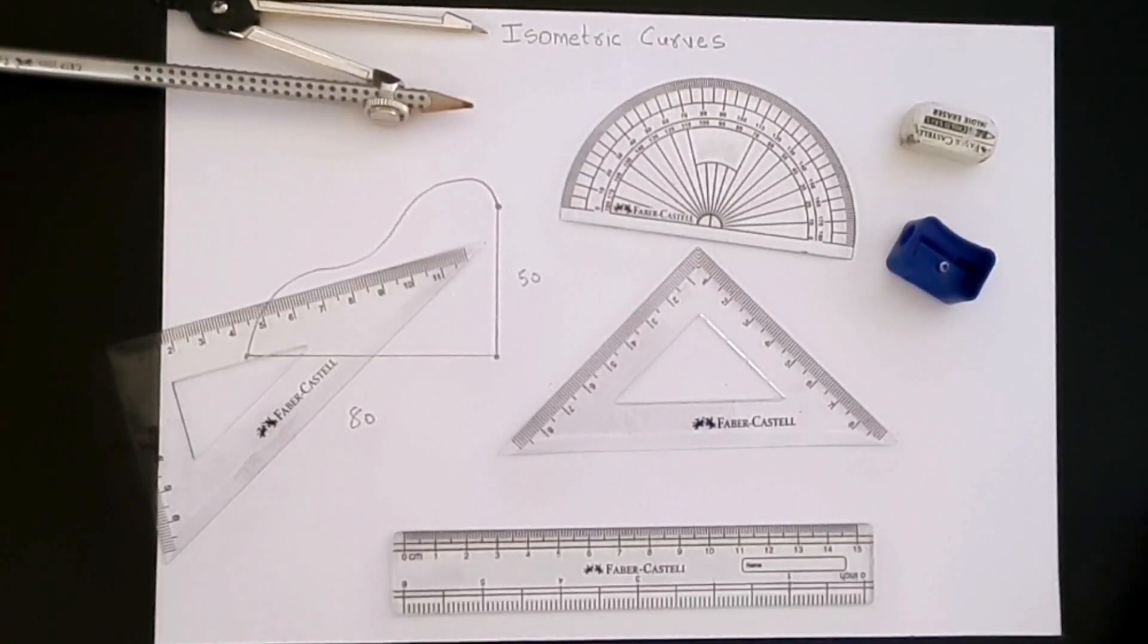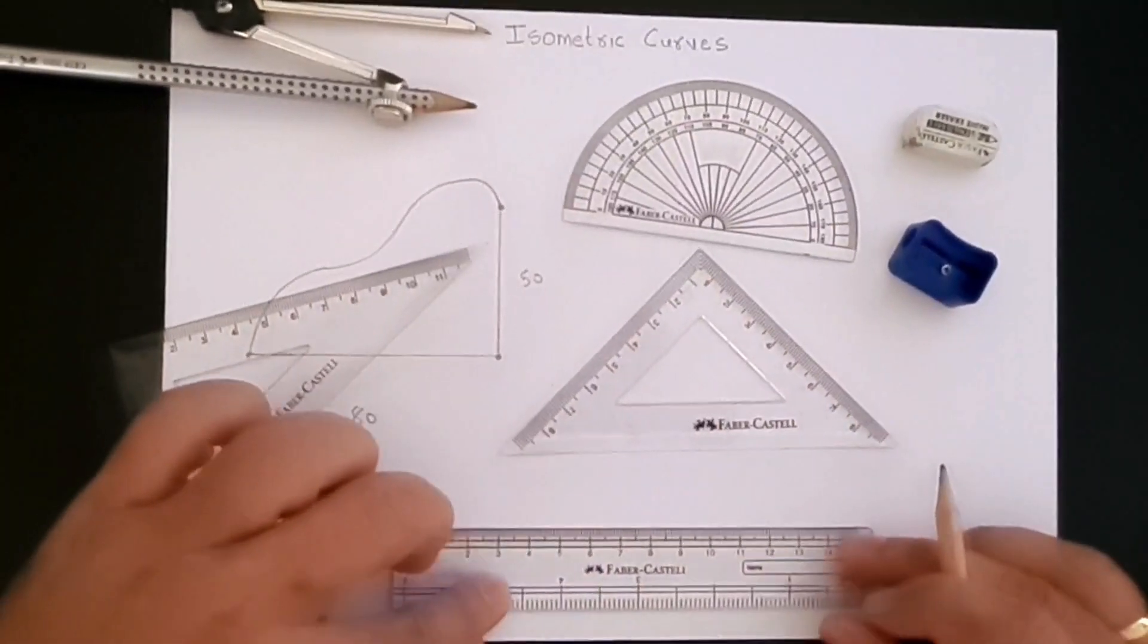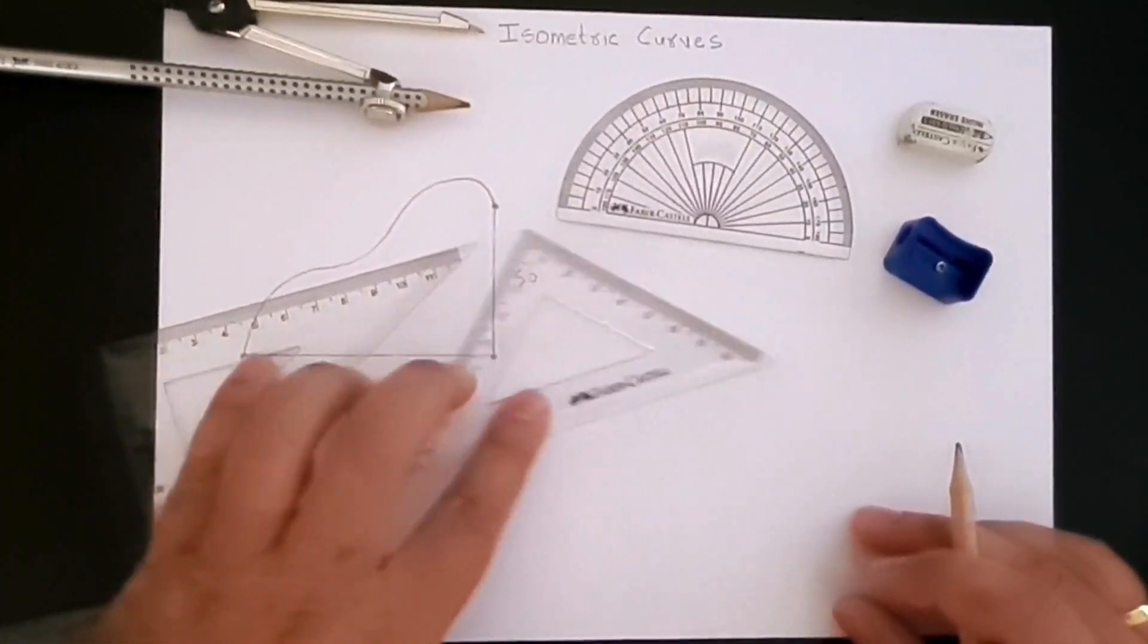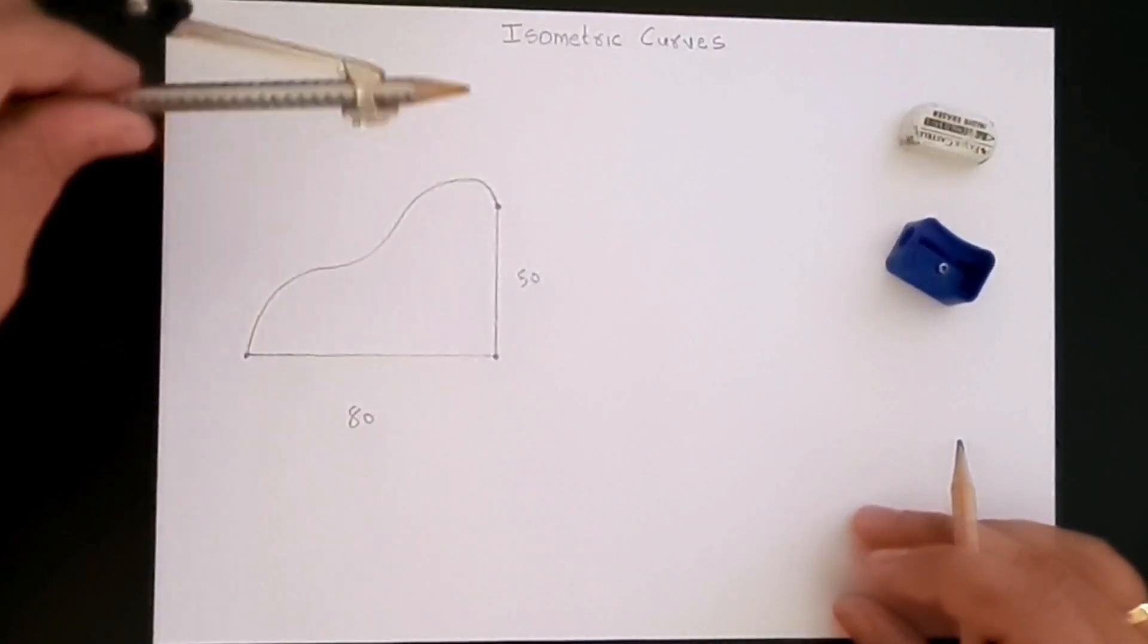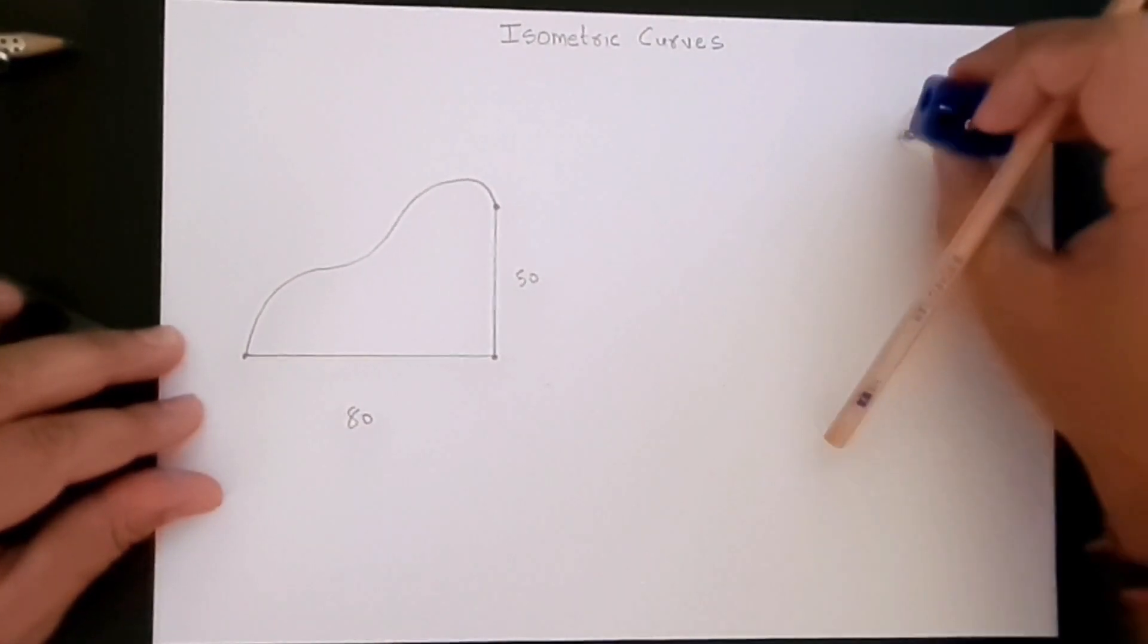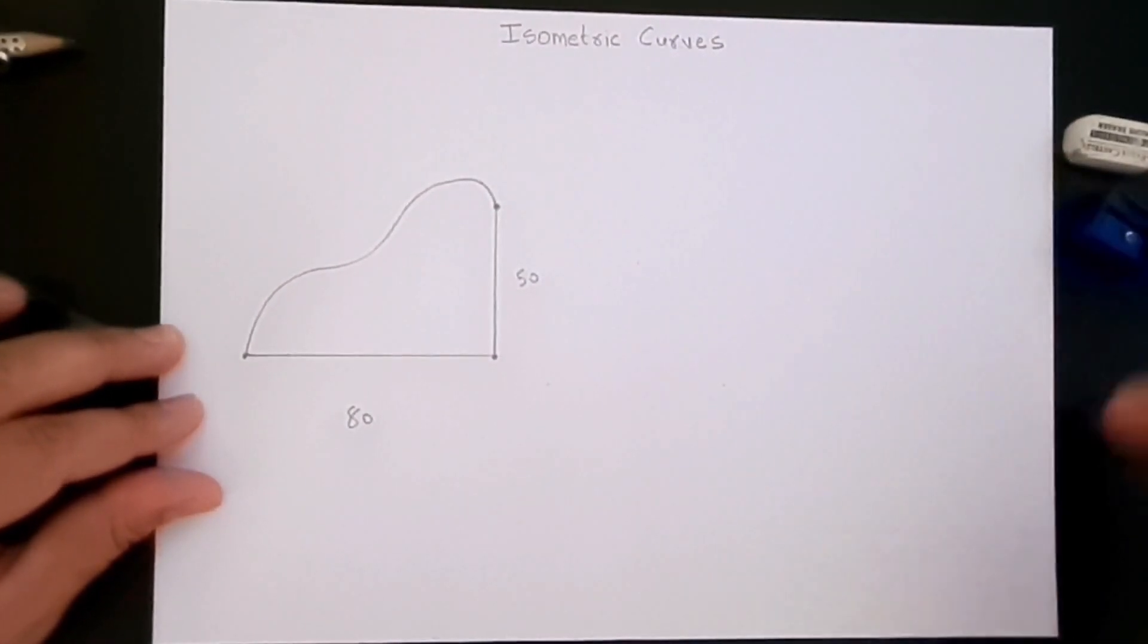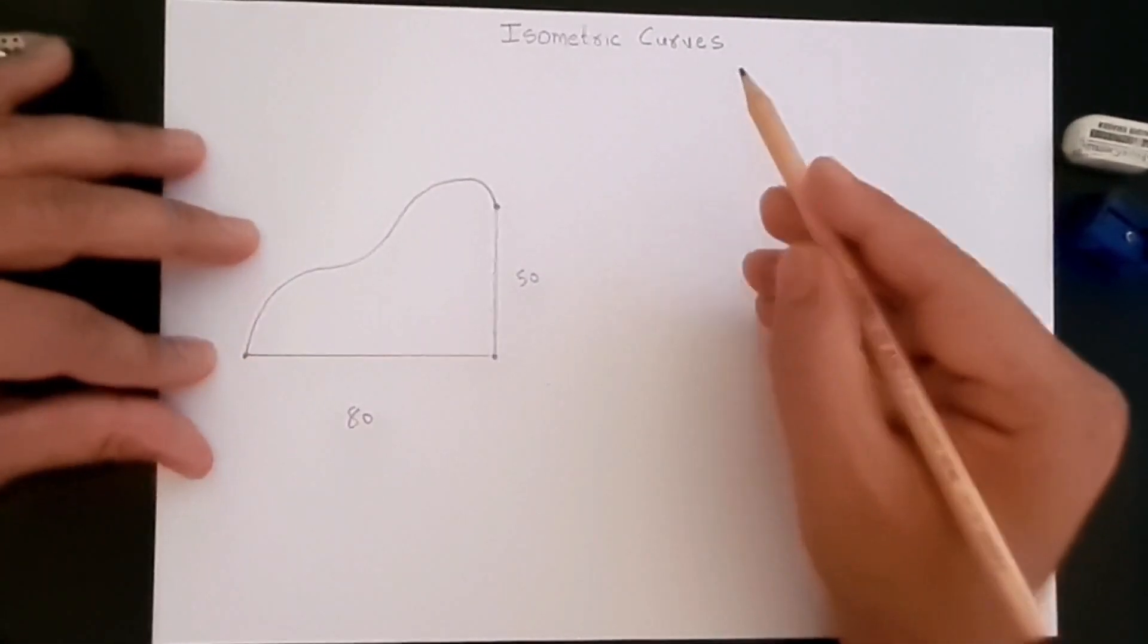Hello and welcome to this video series where we create isometric drawings using standard tools. We are going to use a pencil, scale, set squares, a protractor, compass, and eraser and sharpener. Today we are going to create isometric curves.